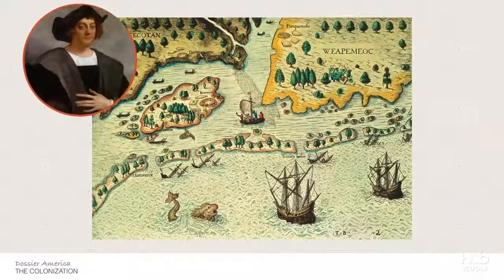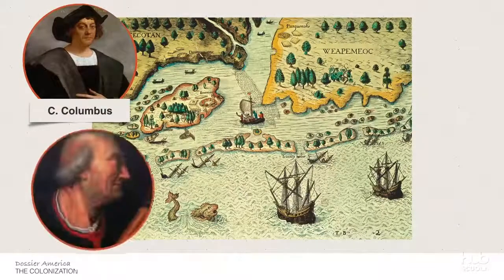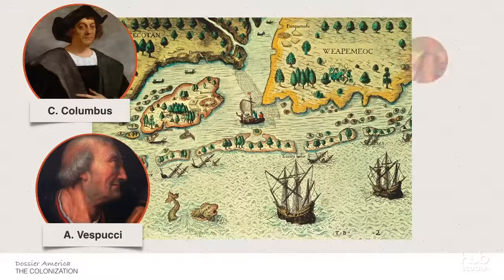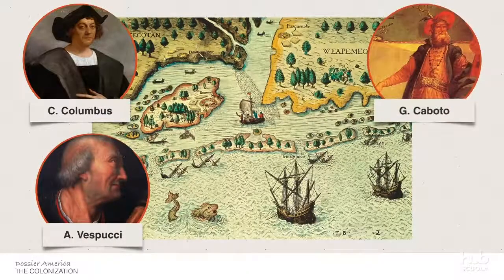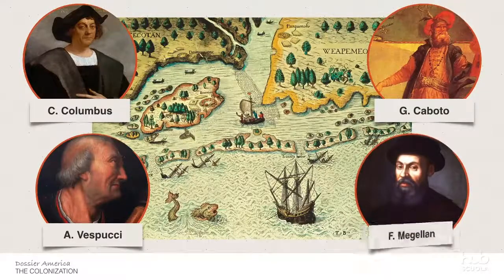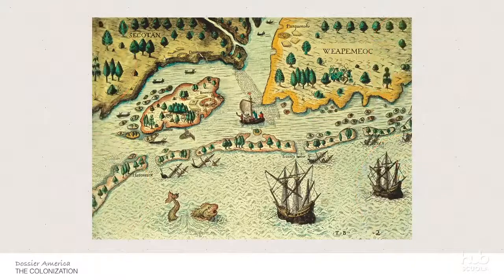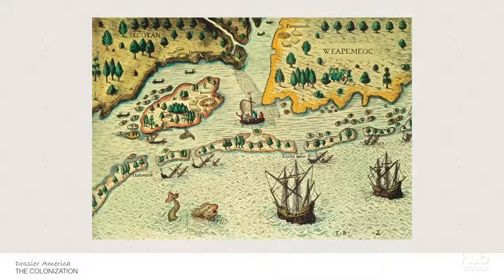The conquest of America, carried out by Christopher Columbus, Amerigo Vespucci, Giovanni Cabotto, and Ferdinand Magellan, resulted in the rise of modern empires. France and England conquered the North American continent, while Spain and Portugal occupied the areas richer in resources and with a favorable climate. The Europeans exploited the natural and human resources in the years that followed.